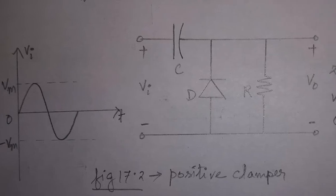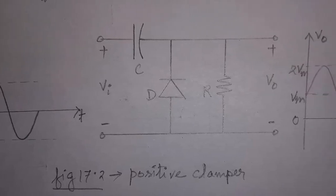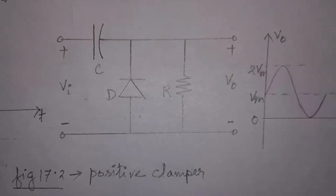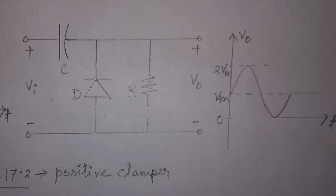If the circuit pushes the signal upward, then the circuit is called positive clamper. Here the negative peak of the signal meets the zero level.